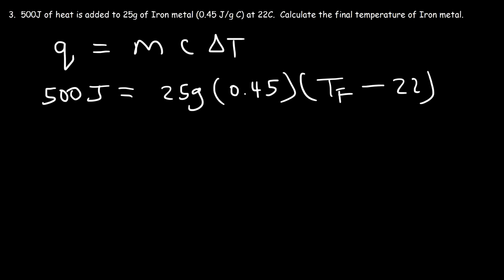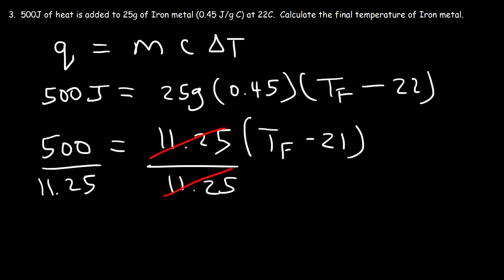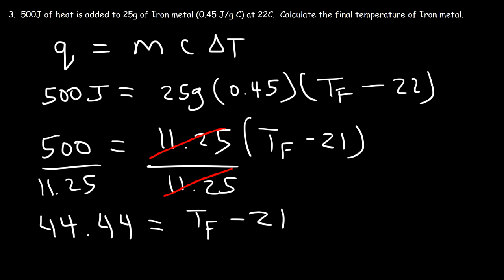First, let's multiply 25 by 0.45, and so that's 11.25. Next, let's divide both sides by 11.25. So what we have now is 44.44 equal to the final temperature minus 22. We need to add 22 to both sides, so therefore the final temperature is 65.4 degrees Celsius.